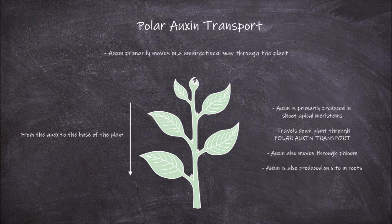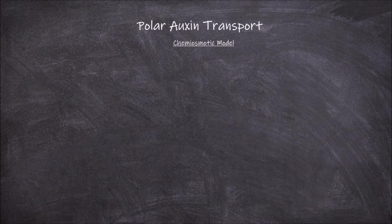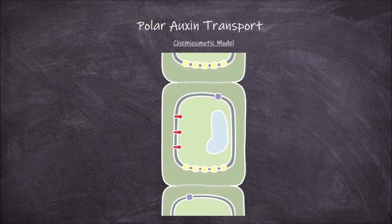In this video we're going to focus on the movement of auxin that occurs through the process of polar auxin transport through the cells. The chemiosmotic model is a model used to describe how polar auxin transport is thought to work.